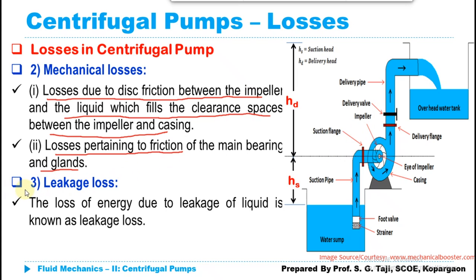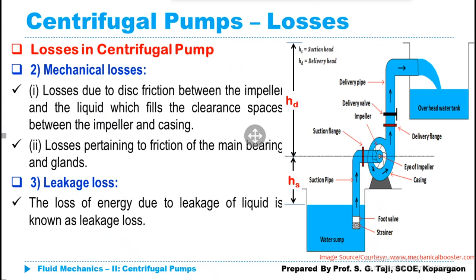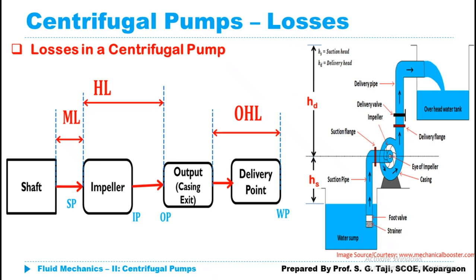Some leakage losses: loss of energy due to the leakage of liquid is known as leakage loss. Whenever liquid is moving through the suction pipe and entering the casing, if there are some leakages in that process, then there will be some water lost — that is said to be a leakage loss. Again, when water is moving out from the impeller and through the casing, if a certain amount of water leaks, that will also be considered as leakage loss. Those losses will help us to better understand the efficiencies.